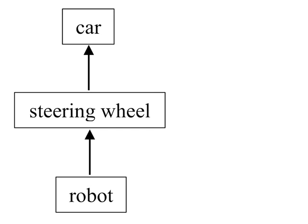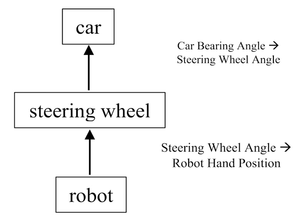Each interaction is learned separately. During control, the transition functions of the Markov decision processes are successively inverted to find the robot action that will lead to desired behavior for an object higher up in the chain.